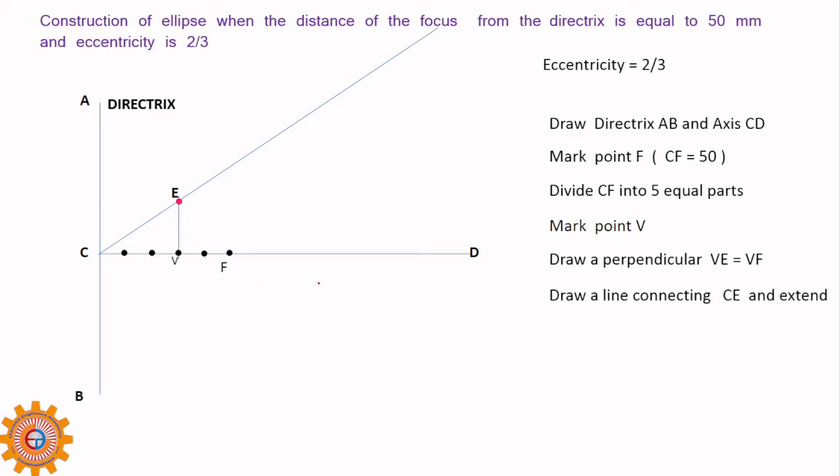Now you have to draw a line joining C and E and extend. Mark them 2, 3, 4, 5, 6, 7, 8. Sometimes if the distance is more between points, the space between 2, 3, 3, 4, 4, 5 must be same in order to have a smooth curve.